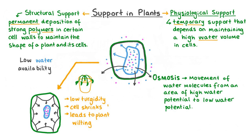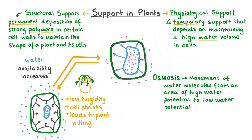When several plant cells shrink in this way, it eventually leads to the plant, especially its leaves, visibly wilting. However, this process is temporary. If the water availability outside the cells increases again, water can move into the plant cell's vacuole by osmosis, from an area of high water potential to an area of low water potential, returning the cell to its normal size.